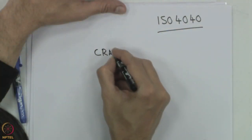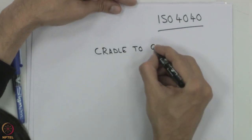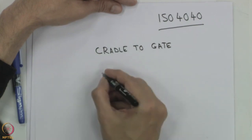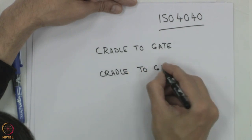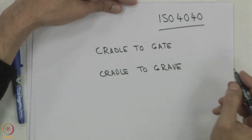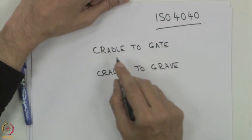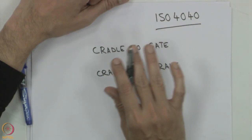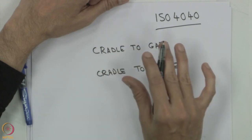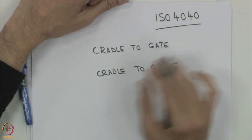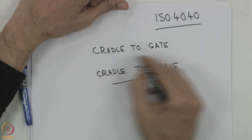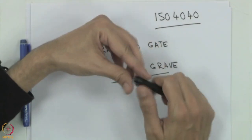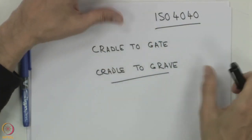There are two approaches: we can do what is known as cradle to gate or cradle to grave. Cradle to gate typically means we start with initiation, the actual manufacture, and go to the gate where the product is produced and used. Cradle to grave means we also look at the disposal phase. The full cycle — if you want to take it — will be a cradle to grave analysis. In some cases we just do the analysis up to the end use, and that is cradle to gate.